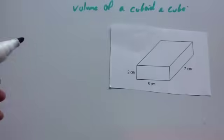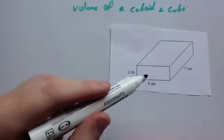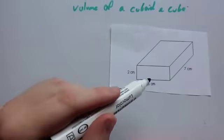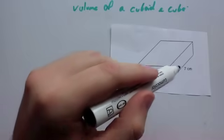Let's have a look at an example. We've got a picture of a cuboid. It's 2cm high, with a width of 5cm and a length of 7cm.